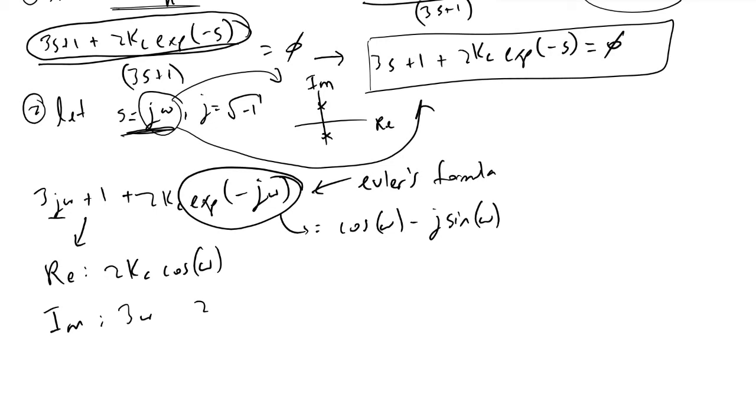Rather, minus 2Kc sine ω, and we would also have a plus 1 in our real term.